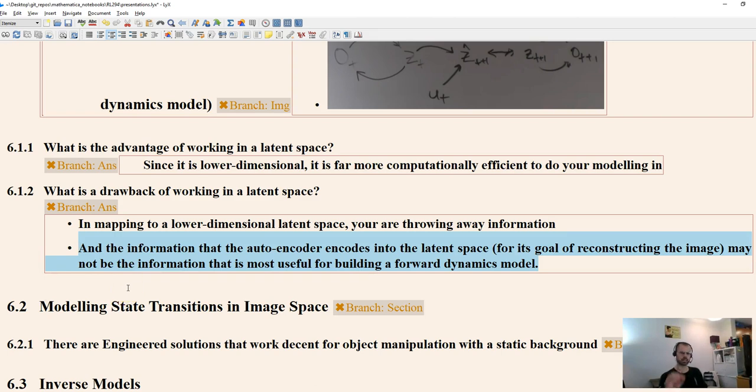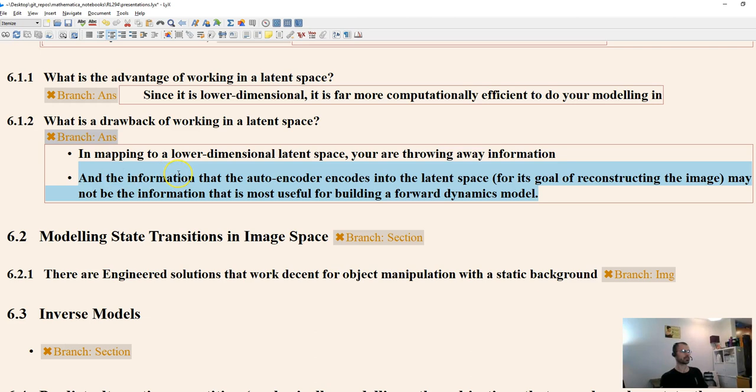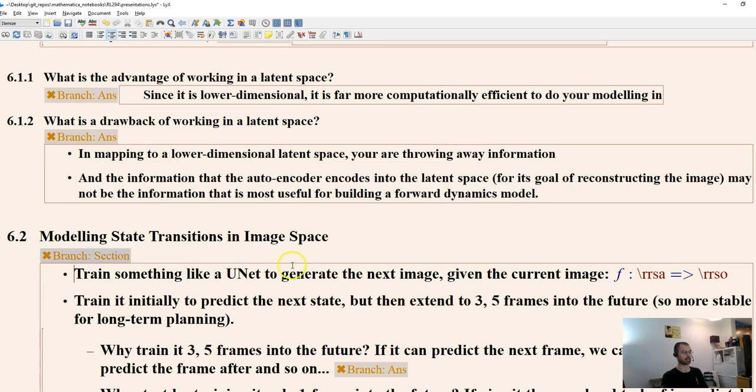So it's not ideal, but in some cases can be very effective. But from what I've seen, it's more in toy examples so far that this has been quite effective. So if we don't want to throw away information, well, why don't we try modeling state transitions directly in image space? Sure, it might cost more, but maybe it'll work better. So that's the next section here.